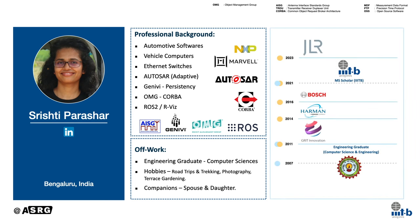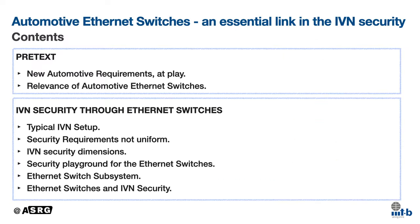The right side pane attempts to highlight my professional and academic trajectory in a simplified way — you can use it for your later references. Now let's look at the contents. It has been divided into two parts. The first part is to set the necessary context to better understand the later part. The second part consists of details about the IVN security through automotive Ethernet switches.